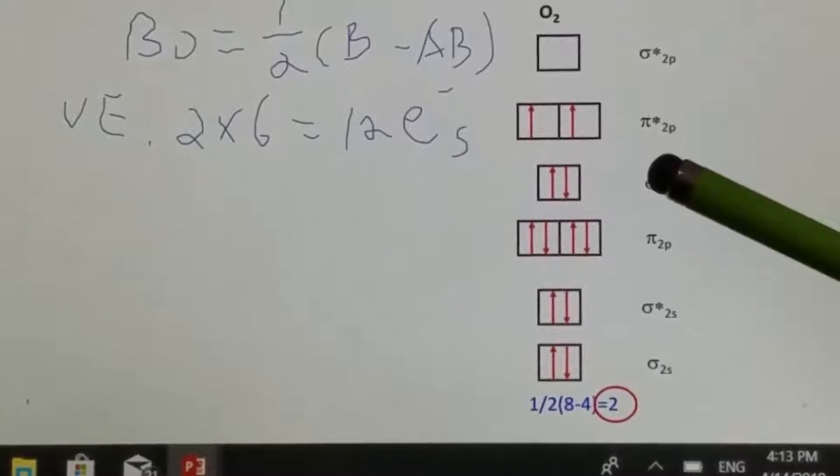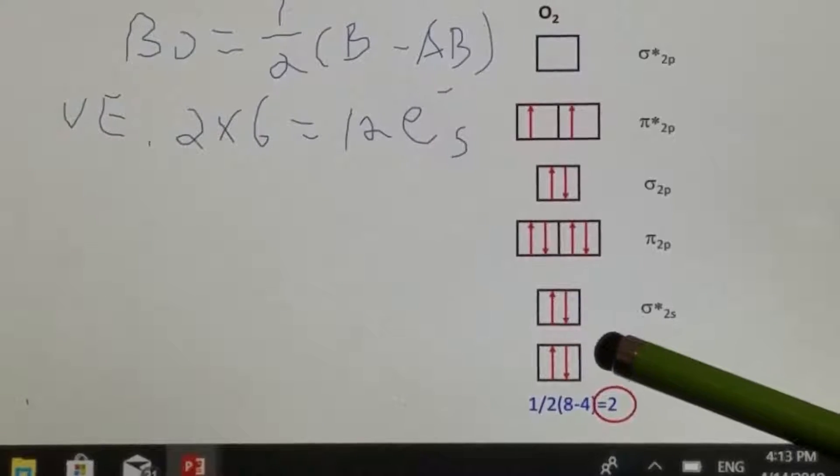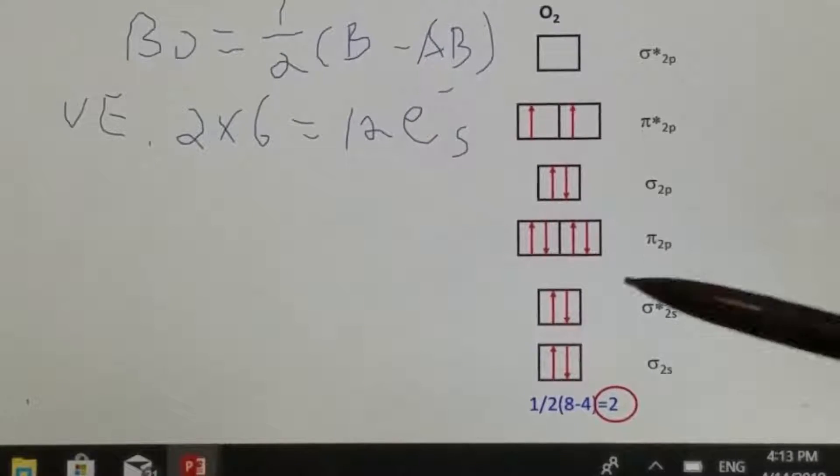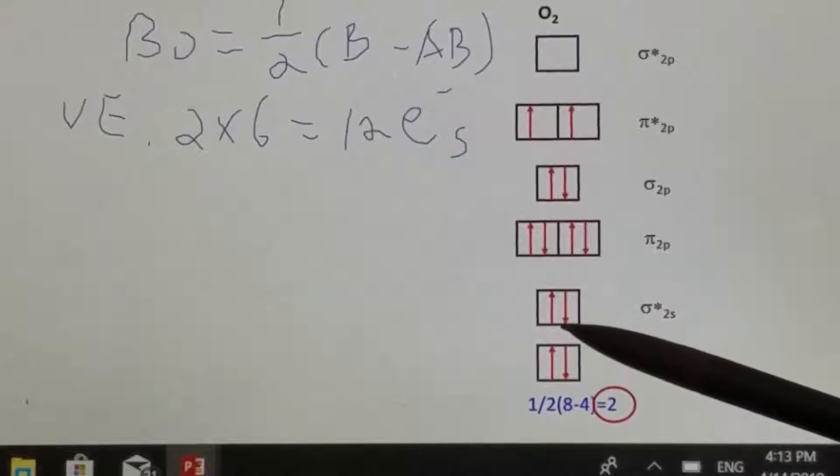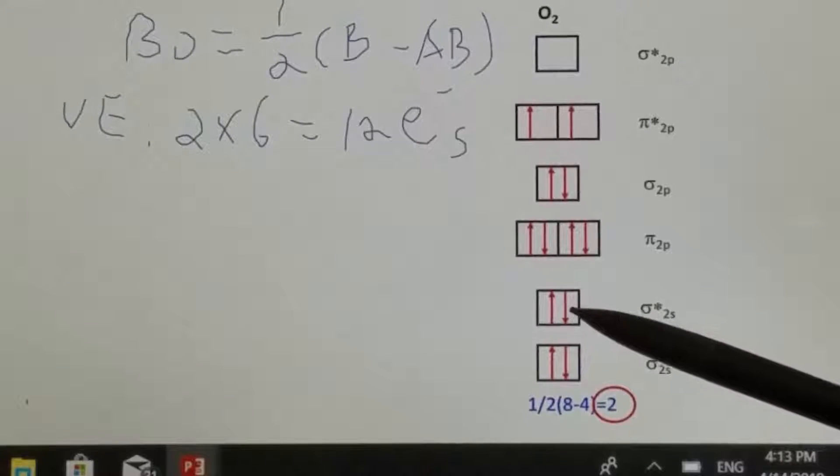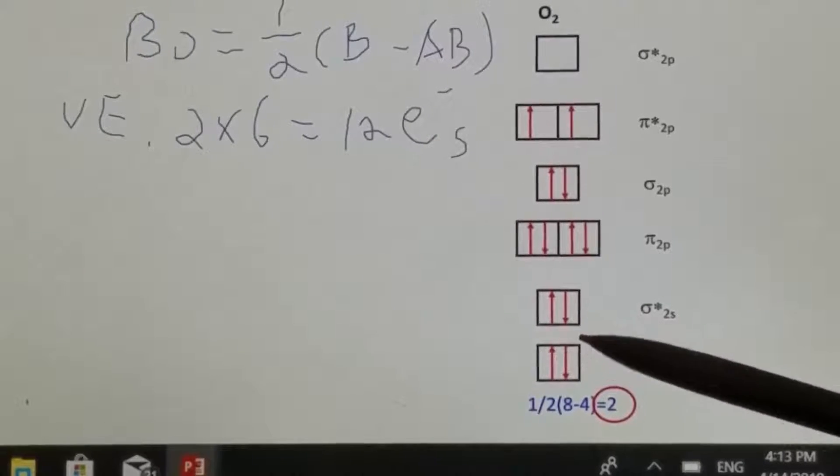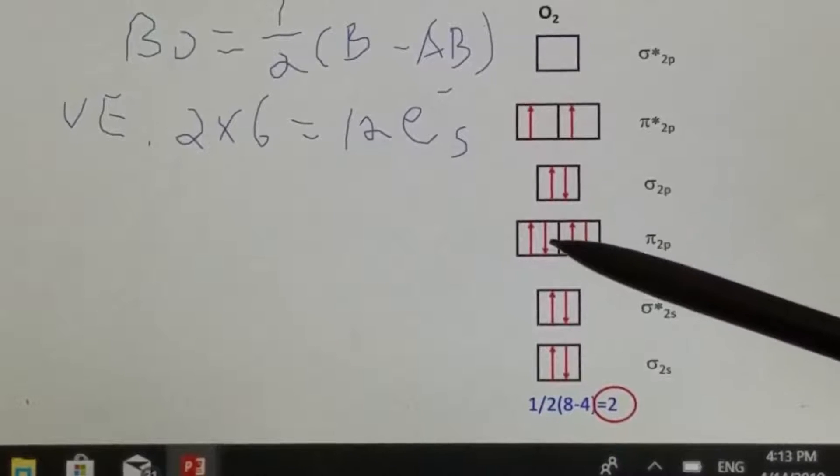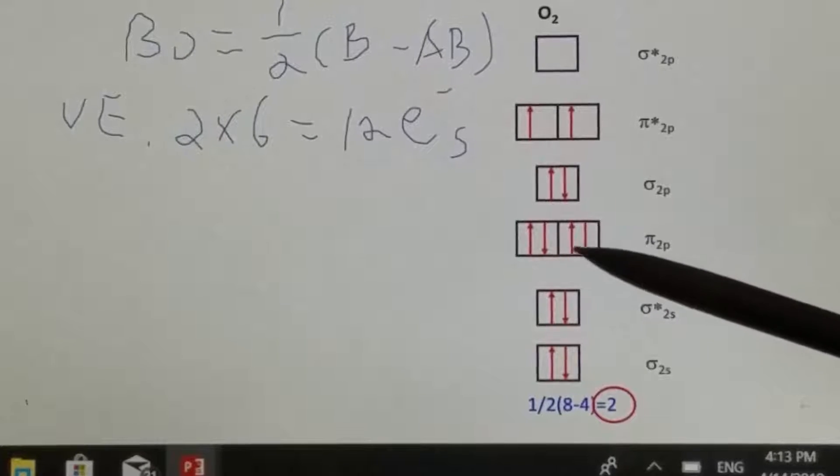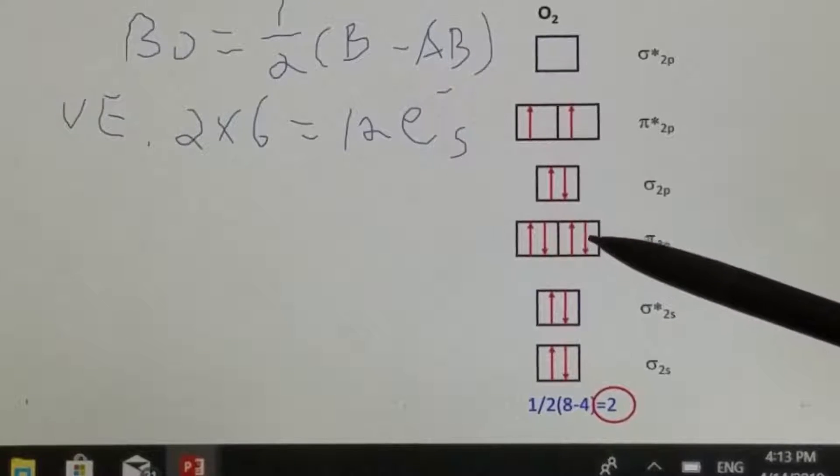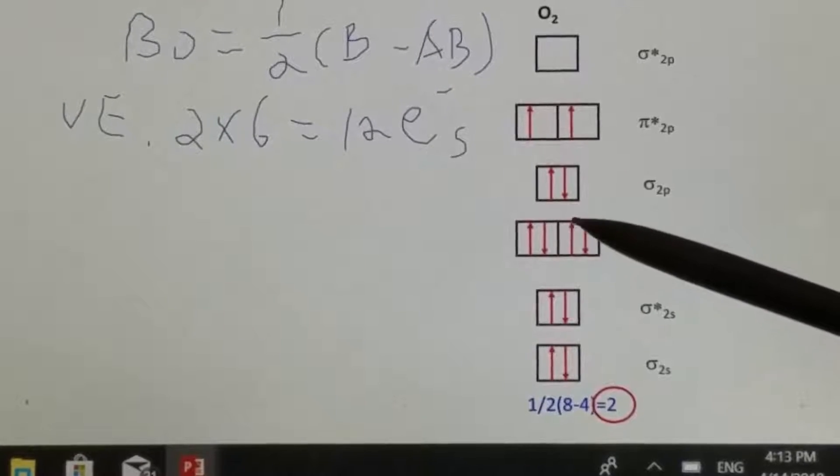Now let's take a look. The first two will occupy the lowest valence energy level, sigma 2s, then followed by the anti-sigma 2s. So far that's four electrons. Then the next four will go to the pi 2p orbital. That's eight already.